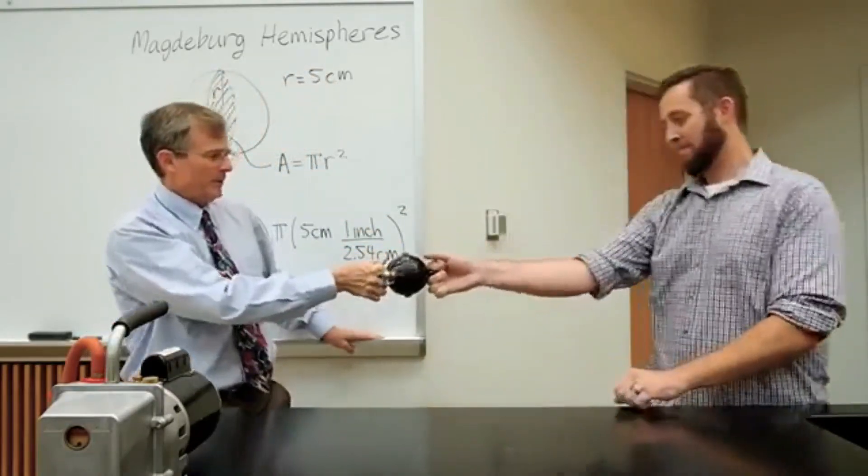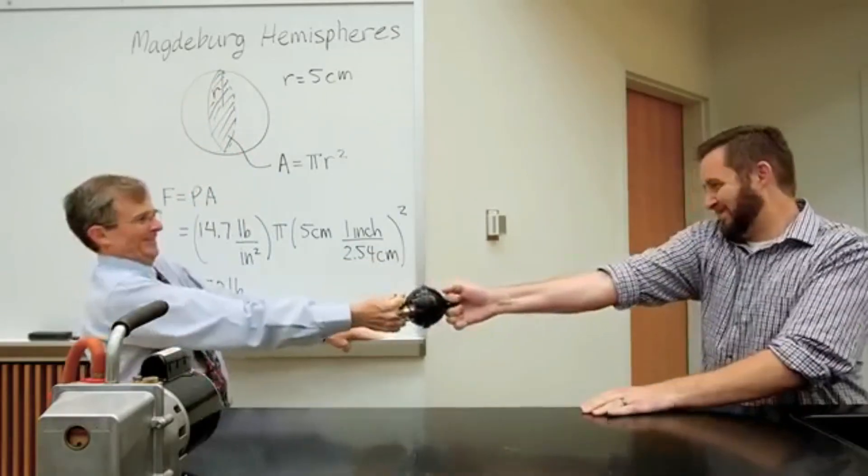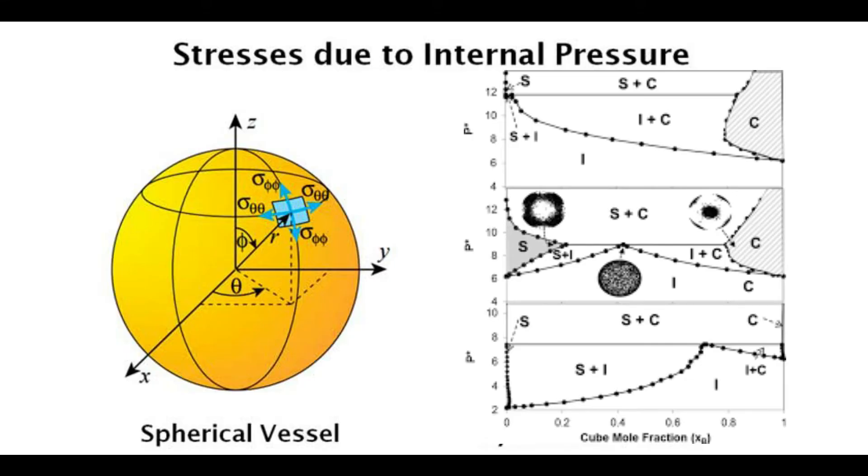This phenomenon occurs due to the sole fact that Otto von Guericke chose a sphere for the experiment. Had he chosen any other shape, it would have inevitably crumbled. But what makes a sphere the perfect candidate for this experiment is that it has no weak points, distributing forces evenly across the surface.